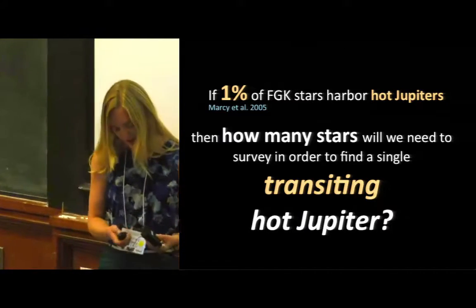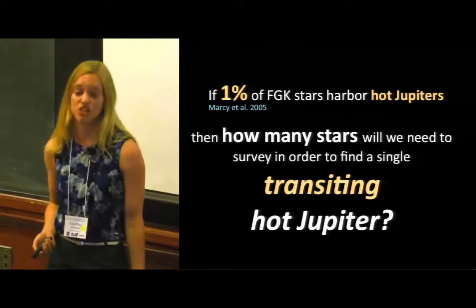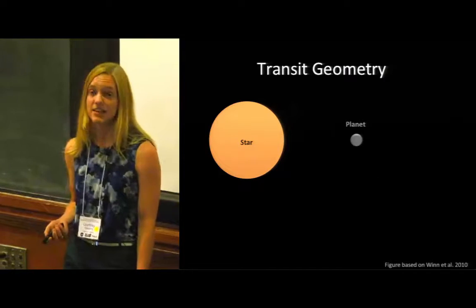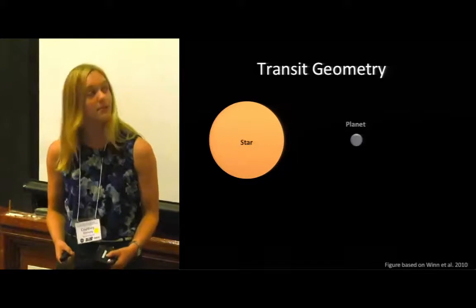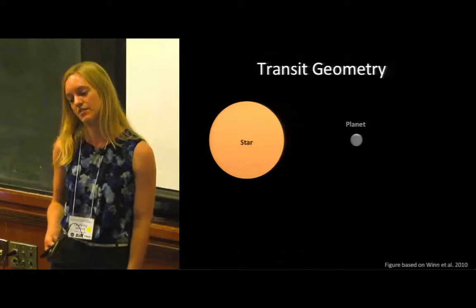And as it turns out, the first thing we need to think about is geometry. We need to consider the likelihood that we would happen to be in a privileged location where we would see a planet cross in front of the surface of the star.